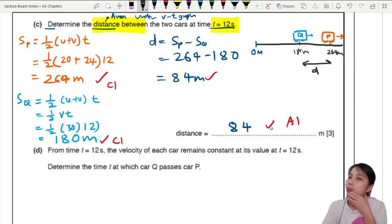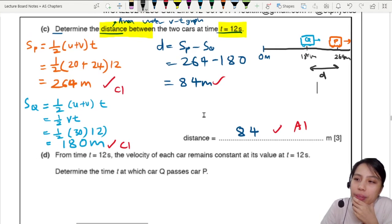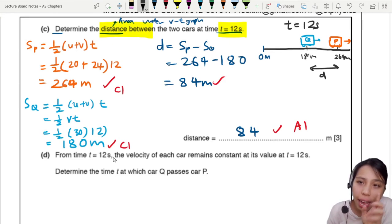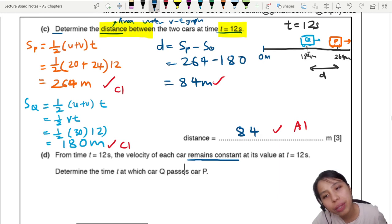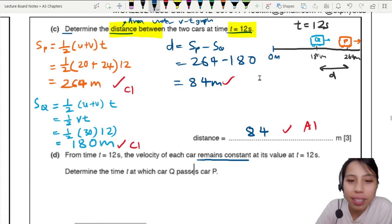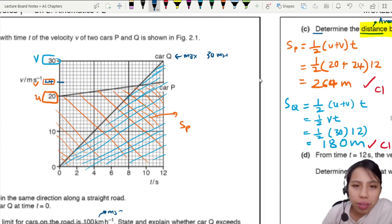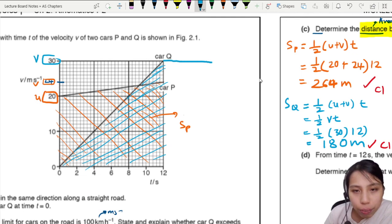So if this is our 0 meters, Q will be somewhere at 180 meters. P will be somewhere at 264 meters. And you want to find distance? This is the distance between them. All right. Let's move on to the next section. Now this is where you gotta think carefully about the question. This is where the trick comes in. From 12 seconds onwards, this screenshot that we draw in the top right, this is at 12 seconds. But now we're looking at after 12 seconds. What happens? Something new is happening. The velocity of each car remains constant. At its value once it's 12 seconds onward. Determine the time where car Q will pass car P.